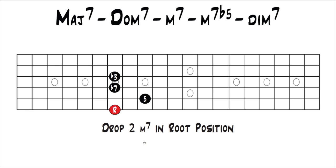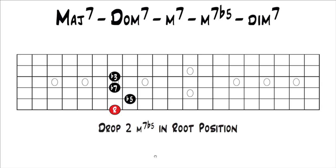The next chord we're going to get to by moving one note is a minor 7 flat 5. You move the 5th to get to the minor 7 flat 5 — you need to move this perfect 5th down half a step to a flat 5, or diminished 5th. The only difference between a minor 7 chord and a minor 7 flat 5 chord is that a minor 7 chord has a perfect 5th and a minor 7 flat 5 has a diminished 5th. So if we move that down, this is your new shape and that gives you a drop 2 minor 7 flat 5 in root position.